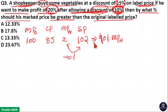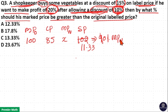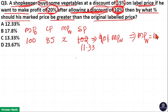Dividing 102 by 0.9: 9 goes into 10 once with remainder 12; 9 goes into 12 once with remainder 3; 9 goes into 30 three times — giving 11.33. So 10% of the new marked price is 11.33, which means 100% of the new marked price is 11.33 × 100 = 113.33 rupees.